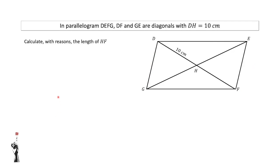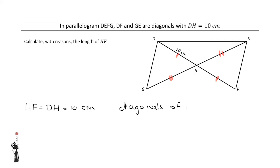Let's have a look at problem 2. In parallelogram DEFG, DF and GE are diagonals, and DH is equal to 10 cm. Calculate with reasons the length of HF. Since this is a parallelogram, I know that DH is the same length as HF, and GH is the same length as HE, since the diagonals of a parallelogram bisect each other. So HF is exactly the same length as DH, which is 10 cm. Reason: diagonals of a parallelogram bisect each other.